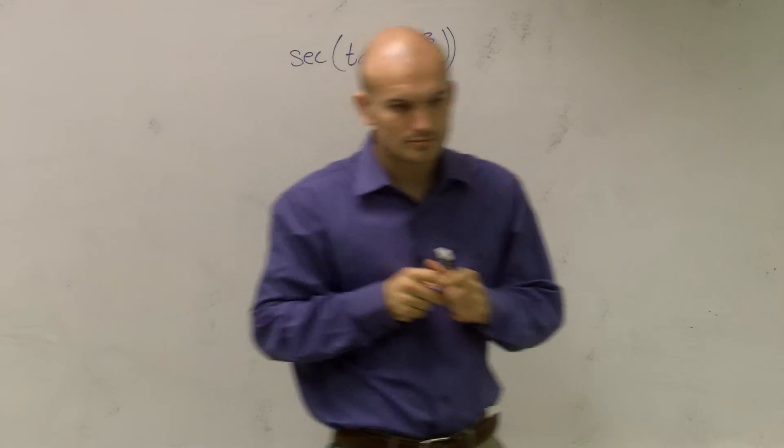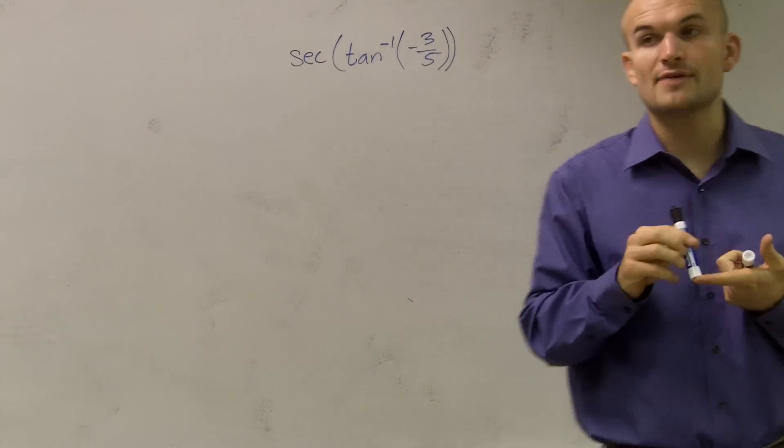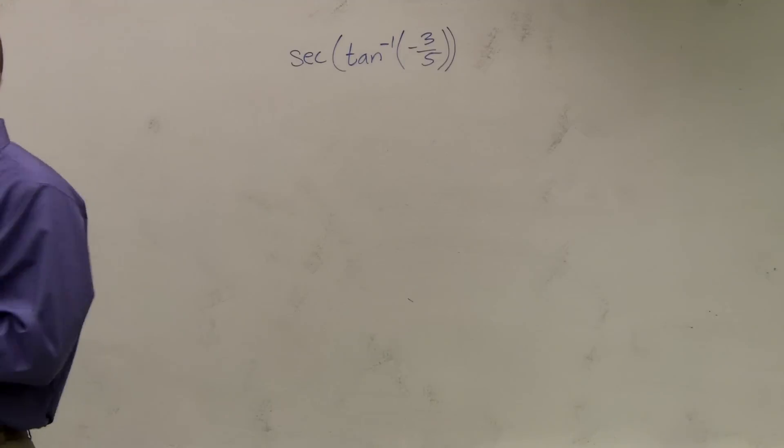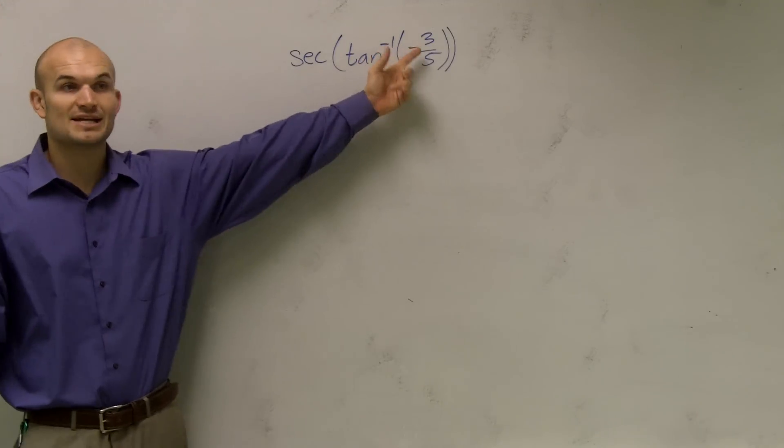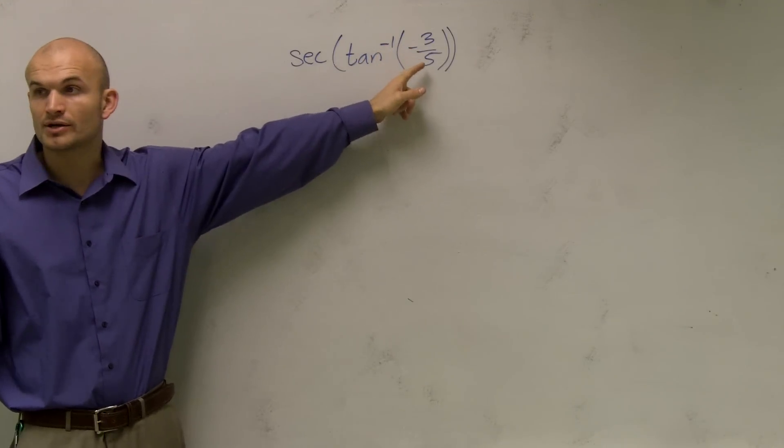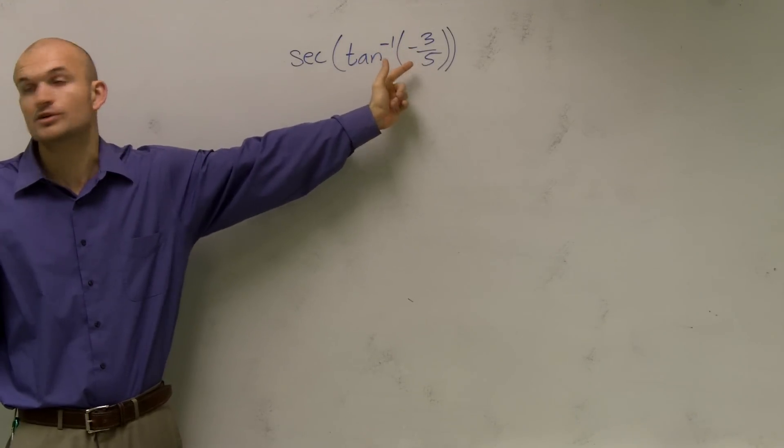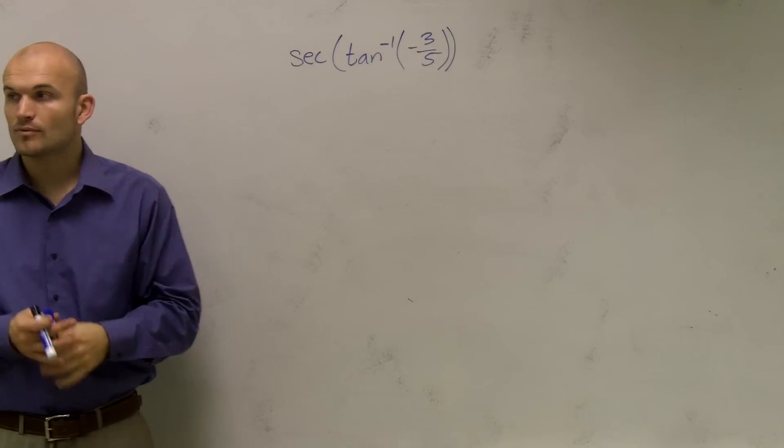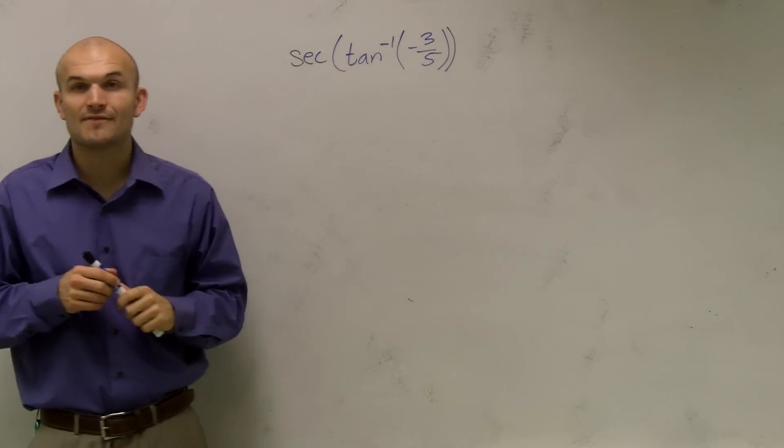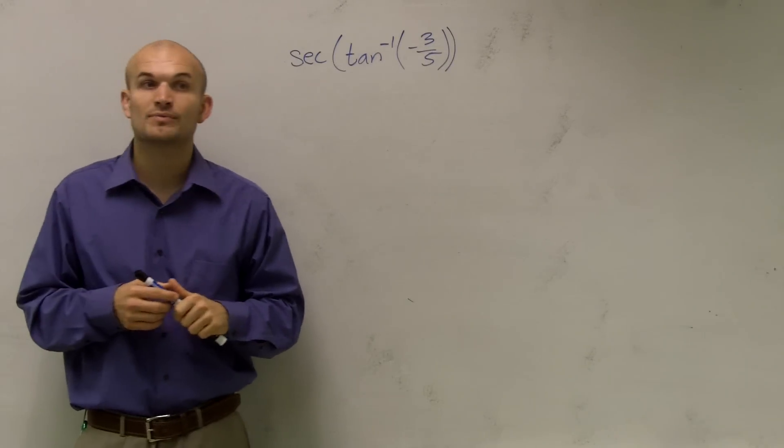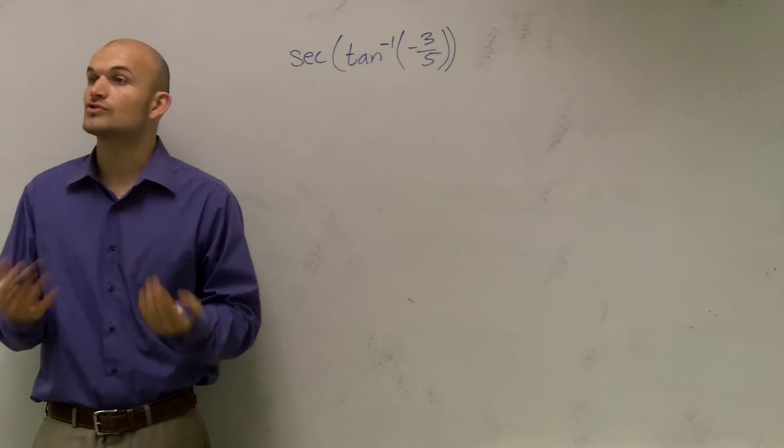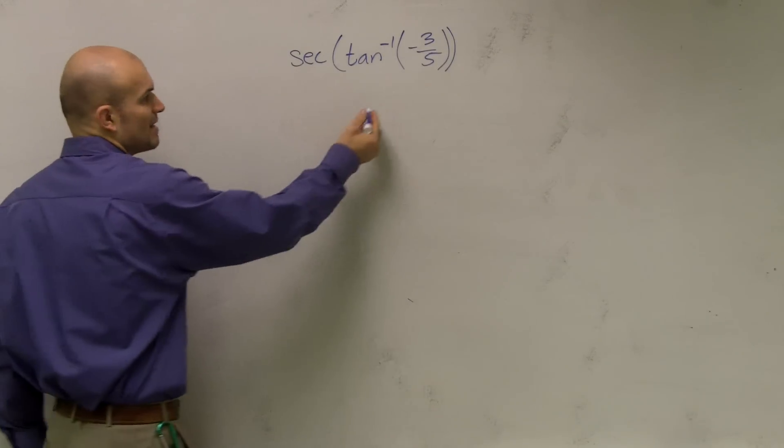Now, if we were given a unit circle for our trig value, it would be very easy for us to pick this out. We could find the inverse tangent, find the angle by giving what our point was on the unit circle, and then we could find the secant of that value. However, here, our negative three-fifths is not a value that's on our unit circle. It's not one that we've been used to. So what I need to do is determine by using a triangle to figure out my value.